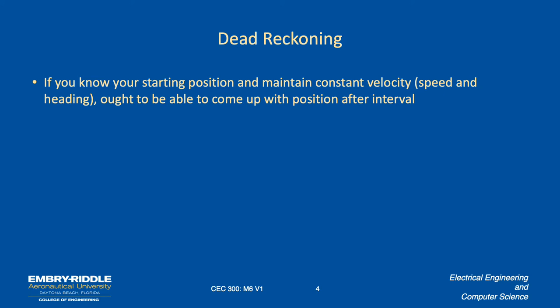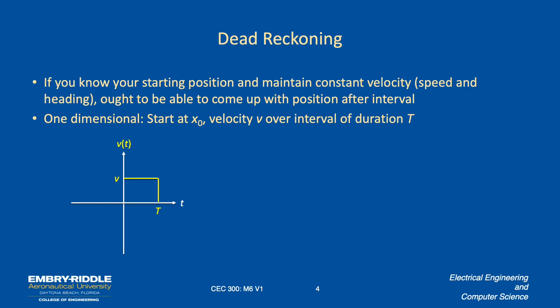We'll do a one-dimensional problem starting at a point x naught and assuming you have a constant velocity v over an interval of duration cap T. Here's our velocity profile - it's constant over the interval cap T. If the velocity is constant, then we're going to add a distance v times cap T to the initial distance and get our new position x1. Really, you can do this incrementally as long as the velocity is constant.